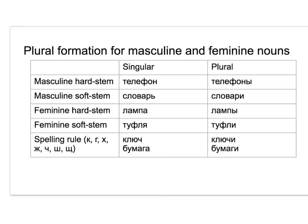You probably noticed our two main endings for plurals for masculine and feminine nouns. But how do you choose between them? We choose Y when the stem of the word is hard. We will choose E when the stem is soft.